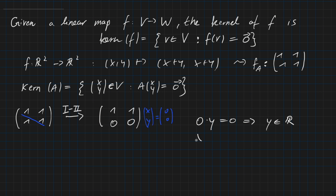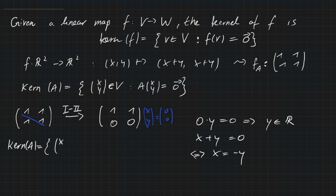The first row reads x plus y equals 0, and we want x as something dependent on y. So we reformulate to x equals minus y, and since y is any real number, x must be the negative of it. We have a dependency between x and y, and the kernel of A is all vectors (x, y) from R² where x equals minus y.